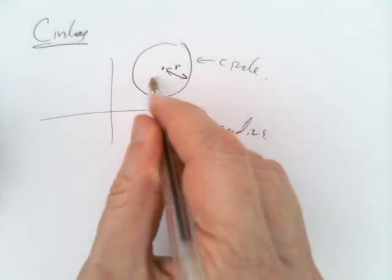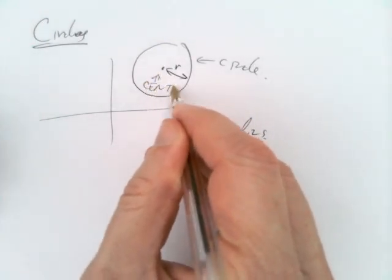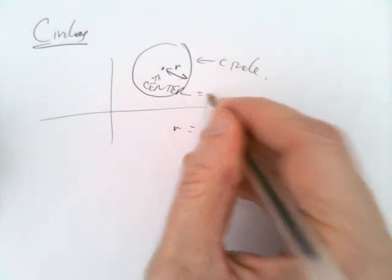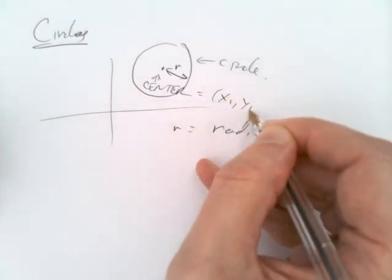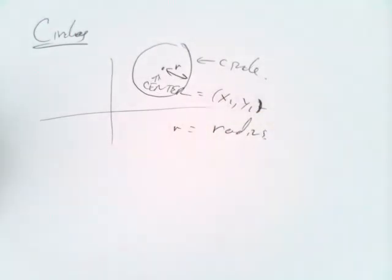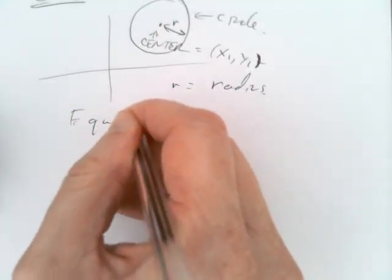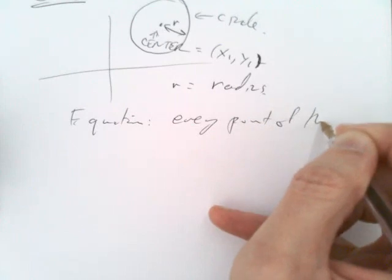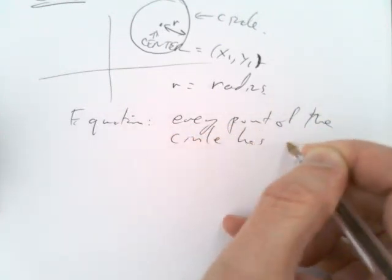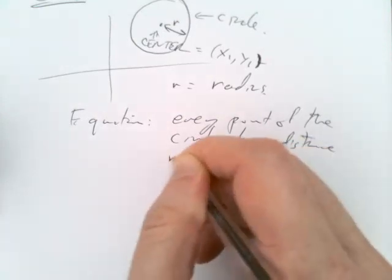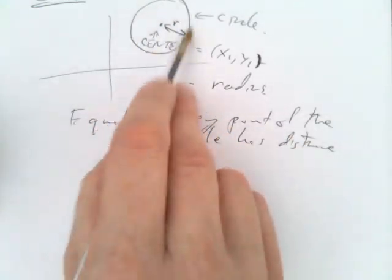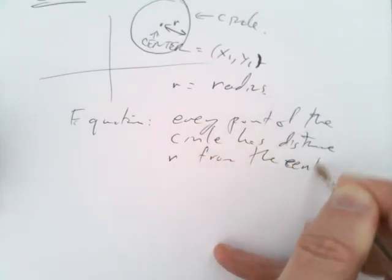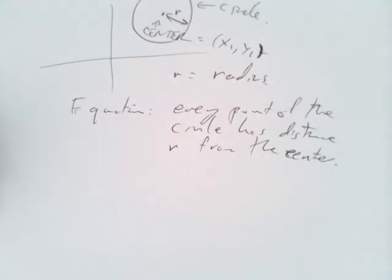R is our usual symbol for radius. The center of the circle, we'll give it some name like x1,y1. Then the equation of the circle says that every point of the circle has distance r. The points of the circle are distance r from the center, and conversely, anything of distance r from the center lies on the circle.